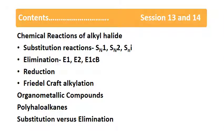Next, we will study the reduction of haloalkanes. There are two types of reduction reactions. First is the reduction by reaction with hydrogen over a nickel catalyst at high temperature — whenever a haloalkane undergoes reduction, we get the corresponding alkane. Second is the reaction with zinc-copper couple in the presence of alcohol, which also reduces the haloalkane to an alkane. In summary, whether by catalytic hydrogenation or by zinc-copper couple, reduction of haloalkanes always gives alkanes.